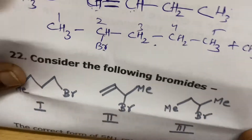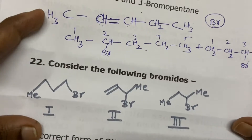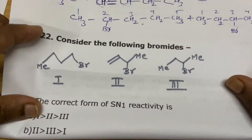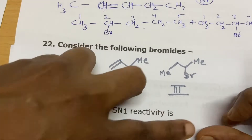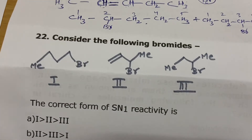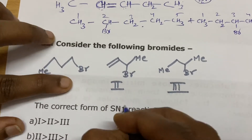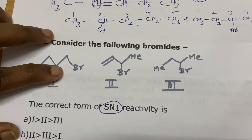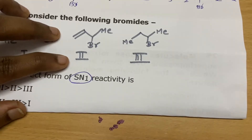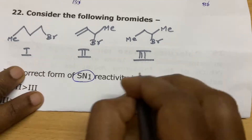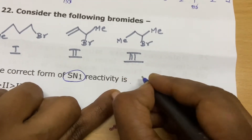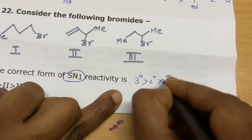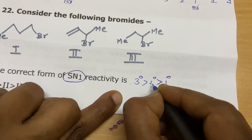Consider the following bromides. What is the correct order of SN1 reactivity? When I think of SN1, I write tertiary, secondary, primary. But here, looking at the structures, this is primary, this is secondary, and this is also secondary.